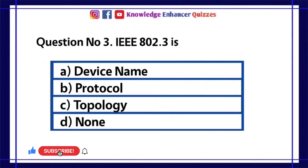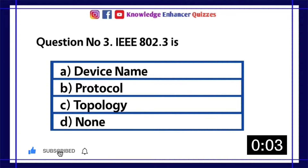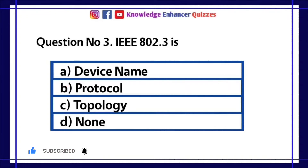Question number 3. IEEE 802.3 is. A device name. B protocol. C topology. D none. Option B is the right answer.